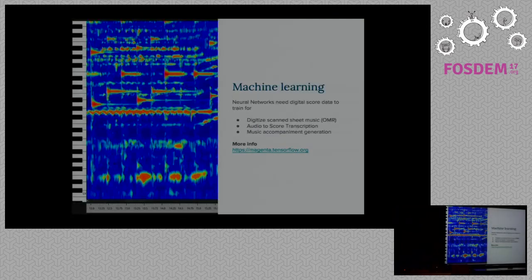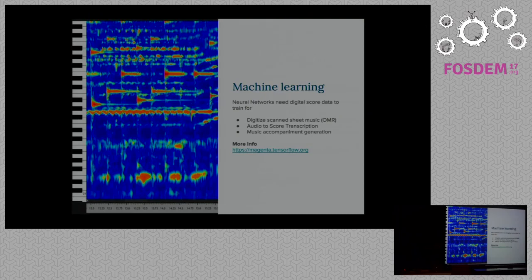Once we have these digital scores, we'll be able to feed them into artificial intelligence and machine learning algorithms to try and teach computers how to create music. You might have heard of projects where they teach the computer Bach's style of composition, and then the computer can output another piece that was not made from any of Bach's pieces but is in Bach's style — that kind of machine learning.